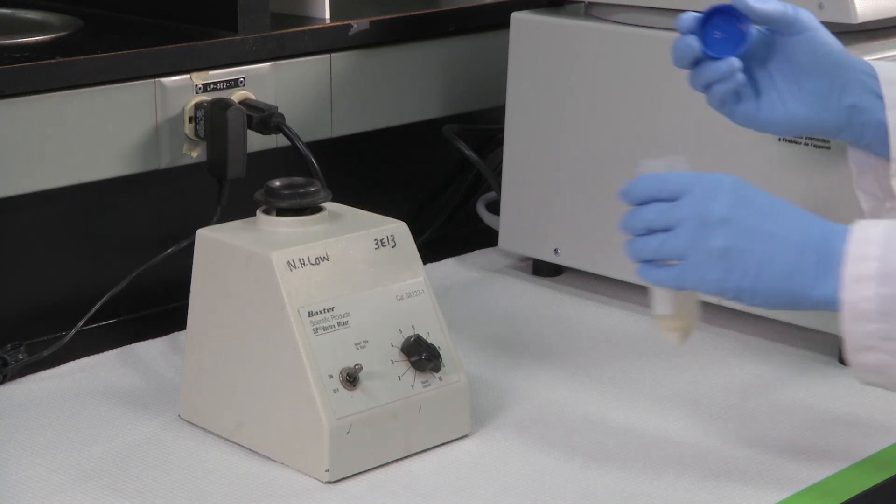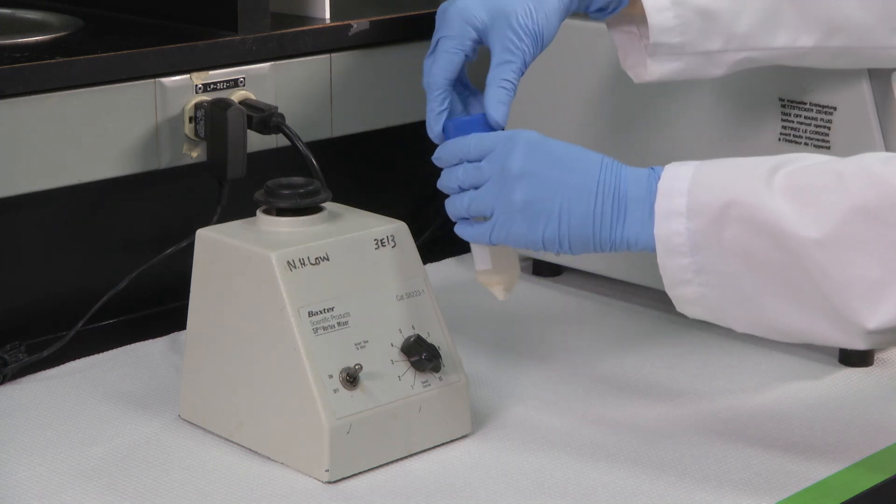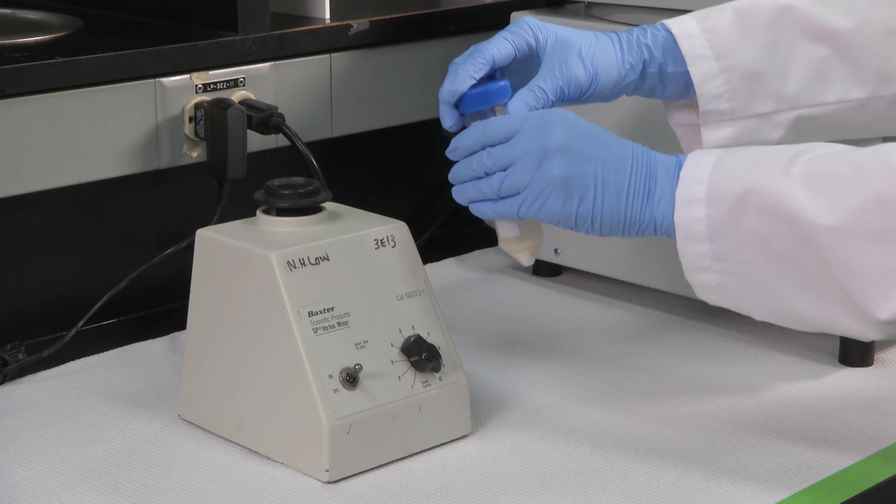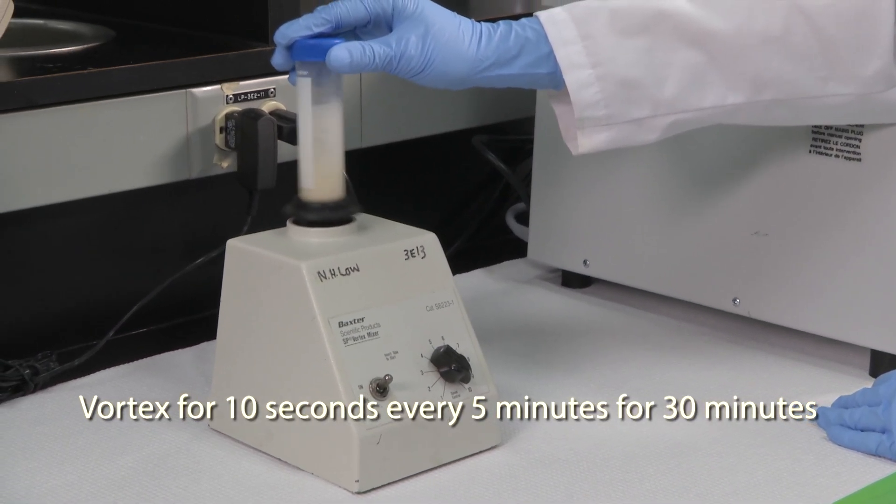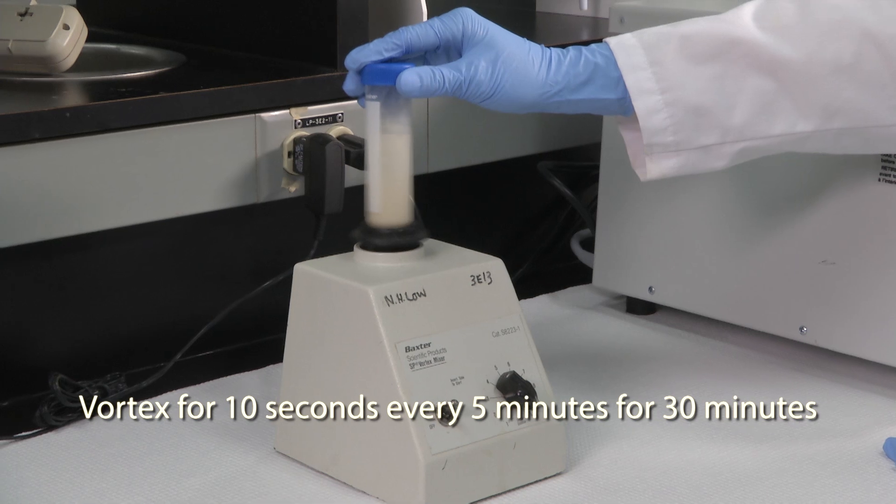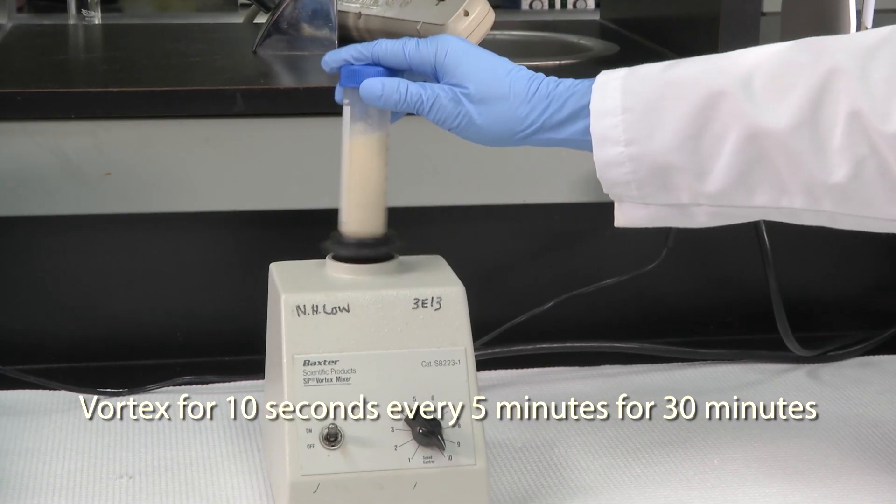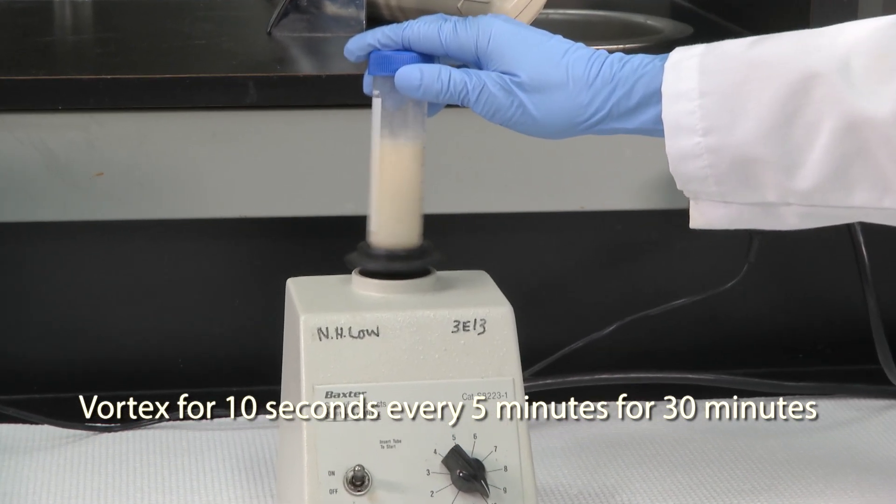Remember to put the cap on the tube before vortexing. Next, vortex the mixture for 10 seconds every 5 minutes for a 30-minute total holding time, making sure the material is thoroughly wetted.